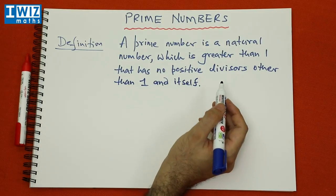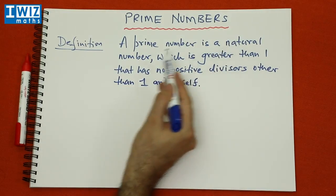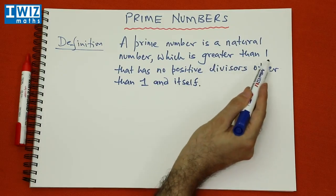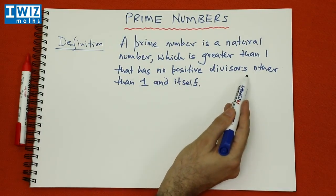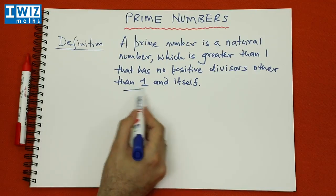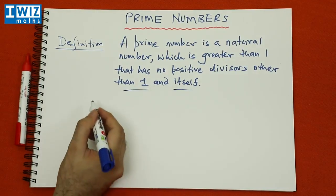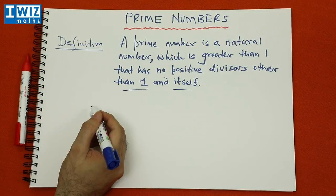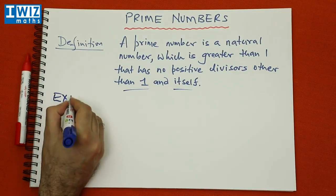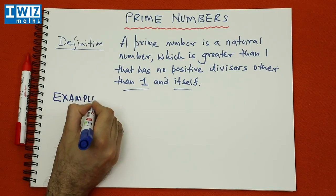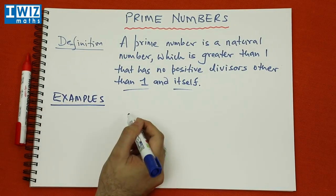The definition of a prime number is: a natural number greater than one that has no positive divisors other than one and itself. The best way to get a handle on prime numbers is to work through a few examples, and we'll see whether various numbers are prime numbers or not.